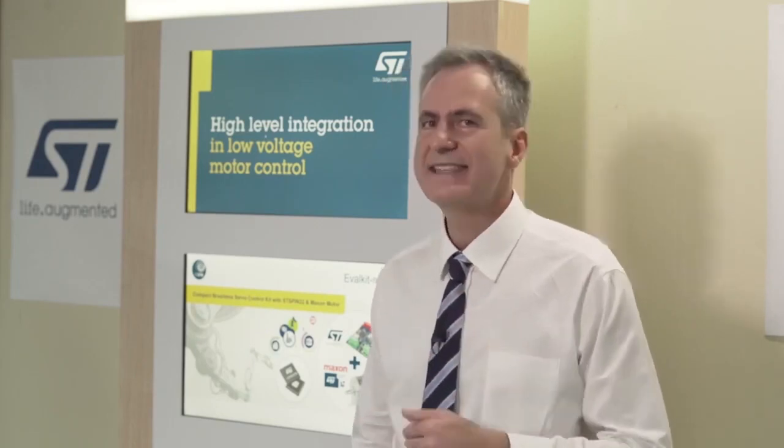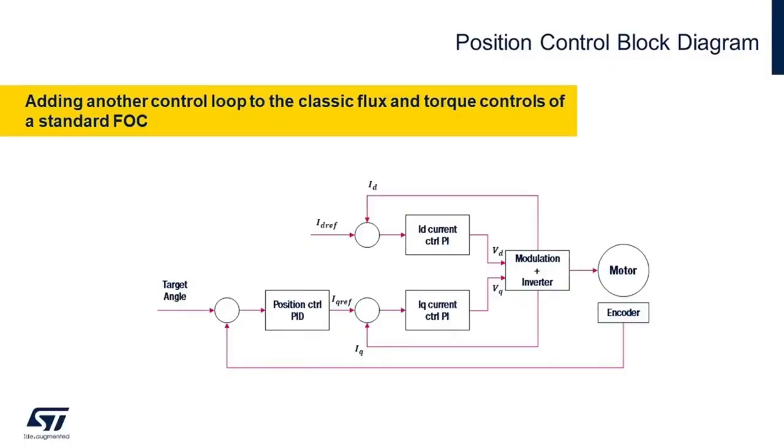Here we are showing how another control loop is added on top of the classical torque and flux control of a standard FOC. This controller tries to minimize the distance between the current position of the rotor and the target.